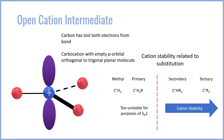The reason for this is a bit nuanced and we're going to talk about it in a separate video. For now, it's worth understanding that the more substituted a cation is, the more stable it is and the faster the SN1 reaction will go.